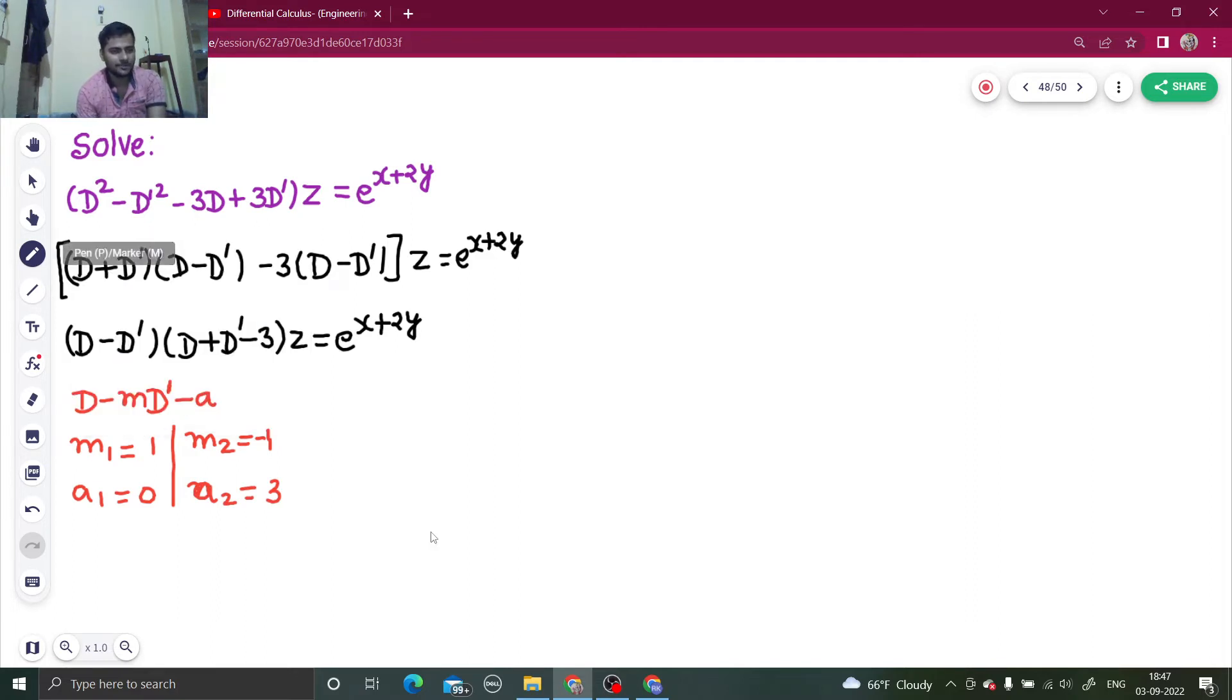You are now all set to write your complementary function which will be e power a1x. So e power 0x. I am not writing that because that is 1. F1 y plus m1 x plus e power a2x. F2 y plus m2 x.